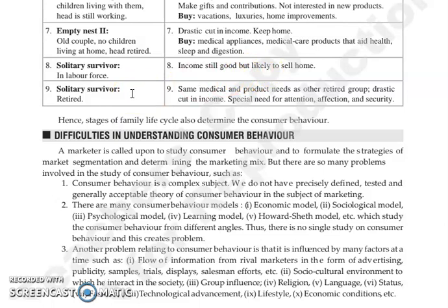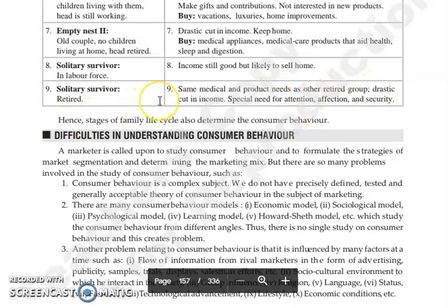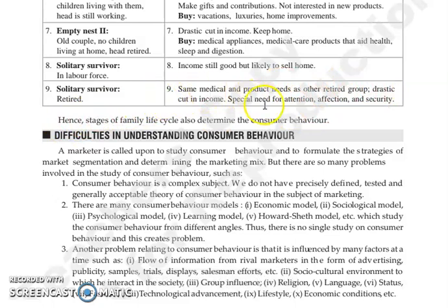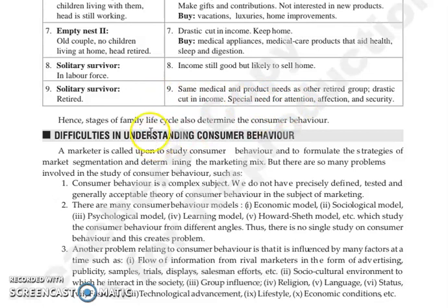Then the next is Solitary Survivor if they are retired. They have the same medical and product needs as other retired groups, but income is drastically cut, along with special needs for attention, affection, and security. So the stages of the family life cycle determine consumer behavior.